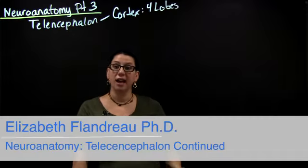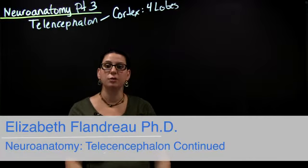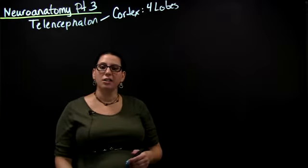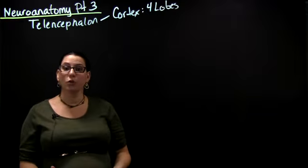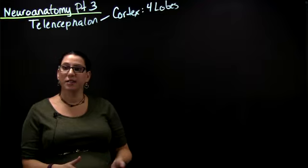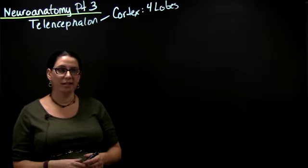We're continuing our discussion of the telencephalon, the phylogenetically newest part of the brain. We've already talked about how there are four lobes of the cortex that have sensory and motor capabilities as well as executive function.